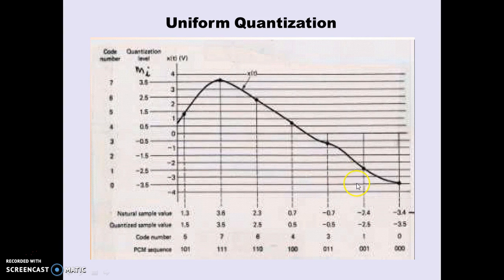Similarly, take another example: a sample at −0.7 V. Since −0.7 V is closely related to −0.5 V, and −0.5 V is within level 3, this sample is assigned to the quantization state of −0.5 V. The actual value is −0.7 V but the quantized sample value becomes −0.5 V. The code number for this sample is 3 and the equivalent binary digital code is 011, generated after the encoder.